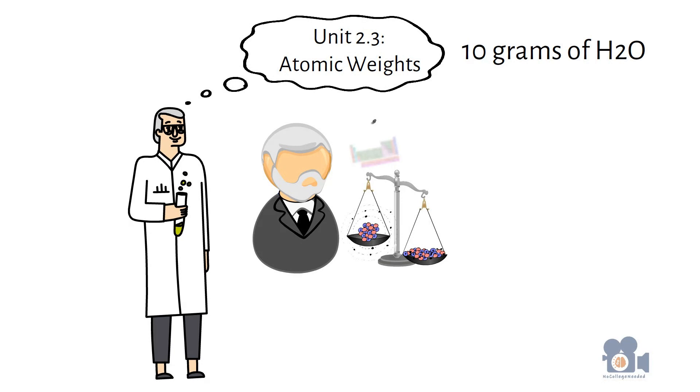For example, 10 grams of water with the chemical formula H2O has 1.1 grams of hydrogen and 8.9 grams of oxygen, even though there are twice as many hydrogen atoms, H2, compared to oxygen atoms.